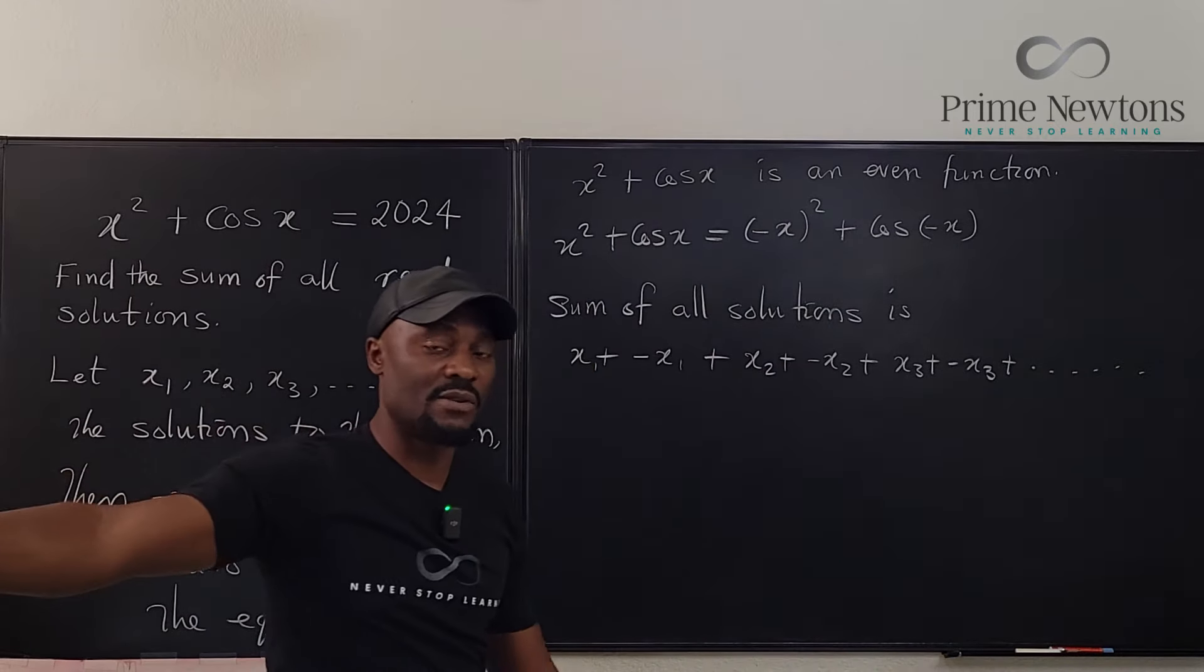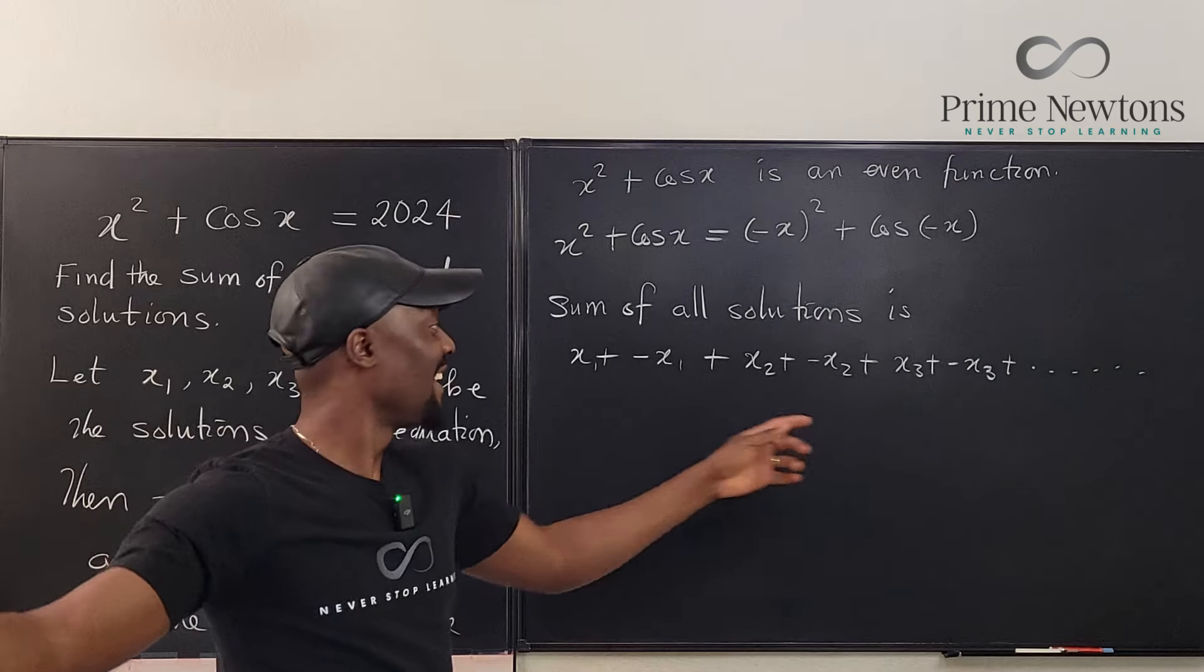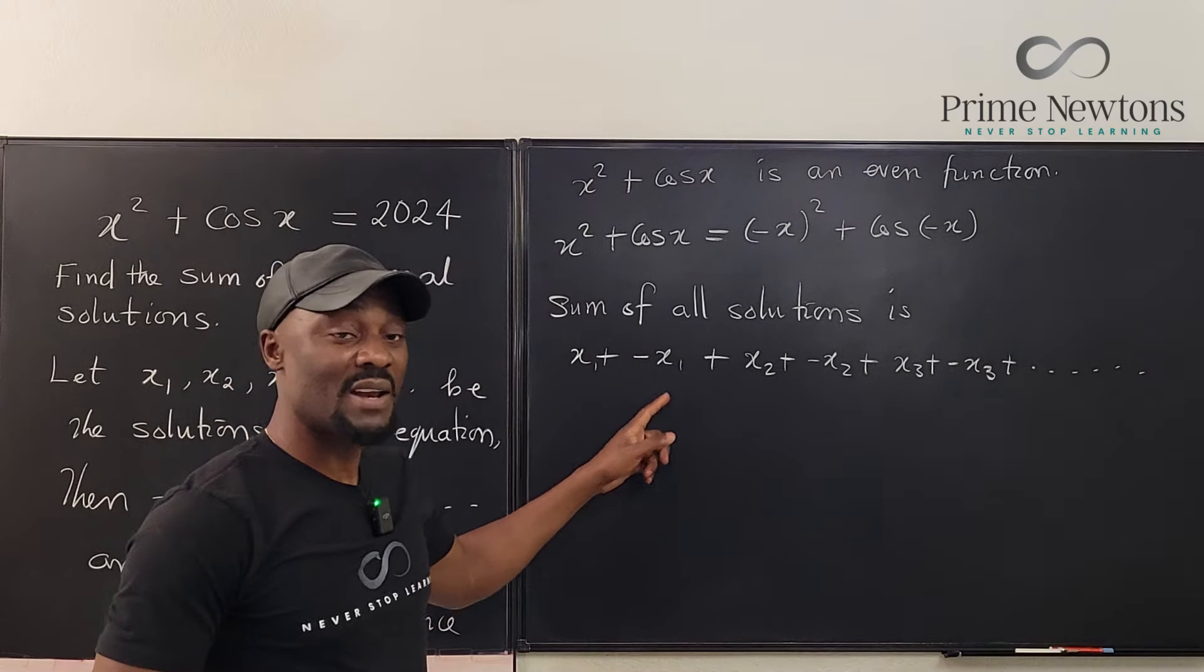That's how it goes on forever depending on how many solutions it has. And what is x1 plus minus x1? It's zero. They're all zeros.